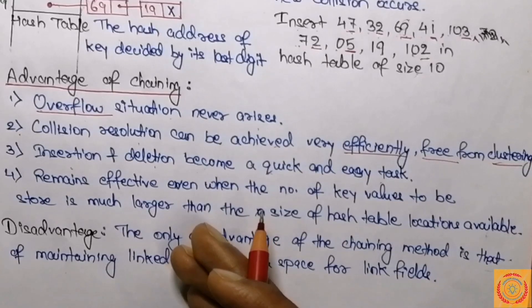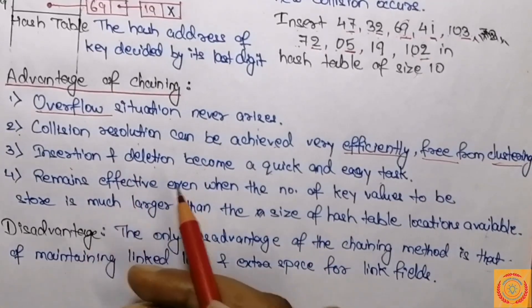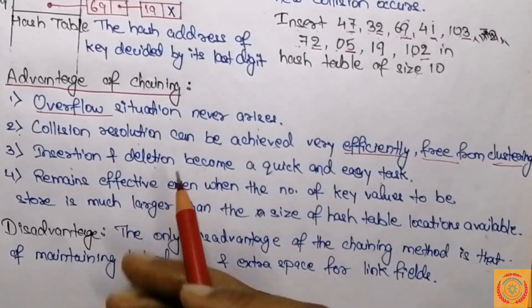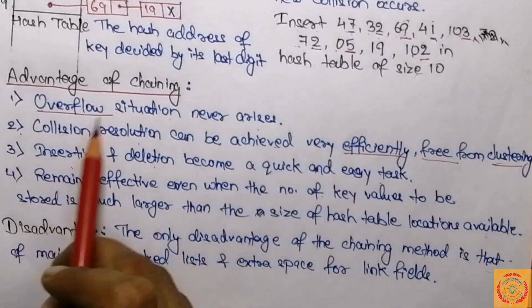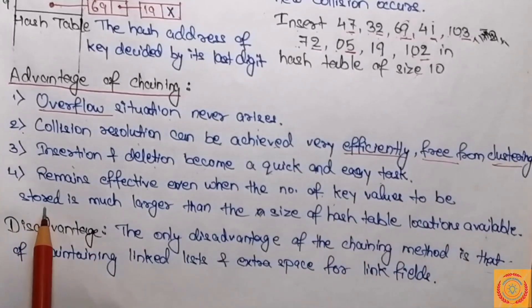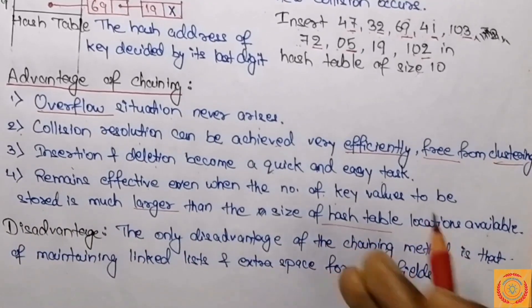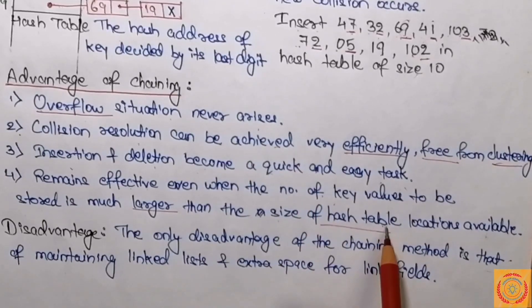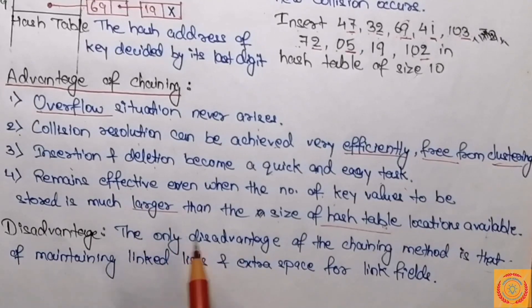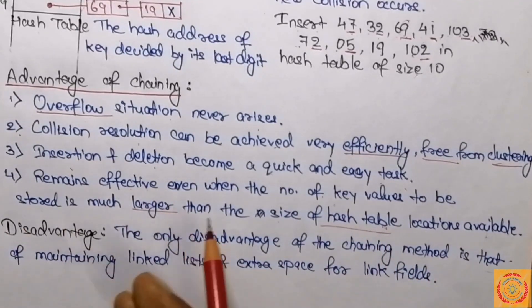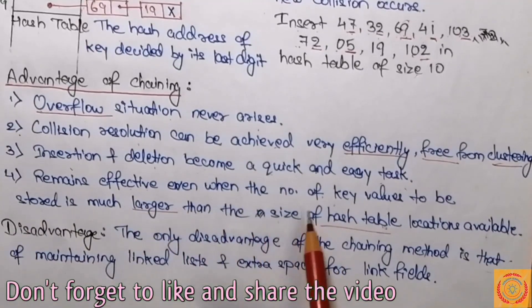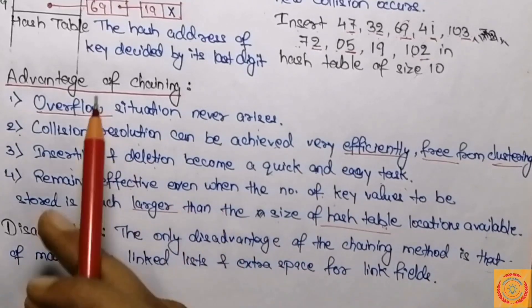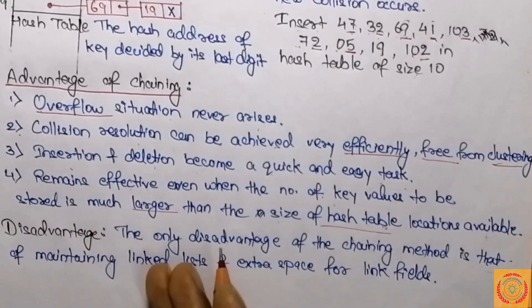Deletion proceeds in exactly the same way as deletion of a node in a singly linked list. Searching can also be done very quickly as the list maintains an ordering of the keys. Furthermore, this chaining method remains effective even when the number of key values to be stored is much larger than the size of the hash table. For example, if 10,000 key values need to be mapped but the hash table size is only 5,000, the closed hashing method could only store 5,000 elements — but here, since linked lists are dynamically created, we can store a large number of key values without any problem.